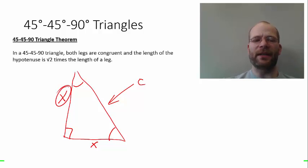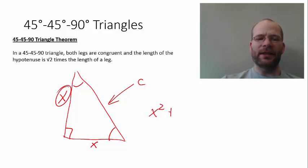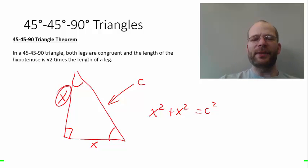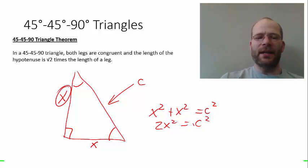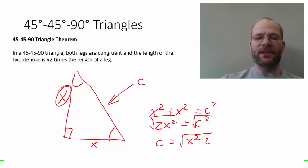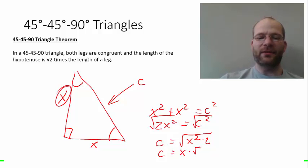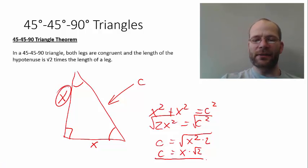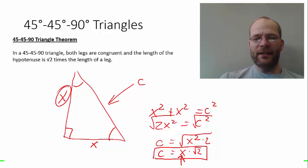We can use the Pythagorean theorem here. We know that x squared plus x squared equals c squared. From algebra, x squared plus x squared is 2x squared, so 2x squared equals c squared. Taking the square root of both sides, c equals the square root of 2x squared, which is the same as the square root of x squared times 2, which equals x times the square root of 2.